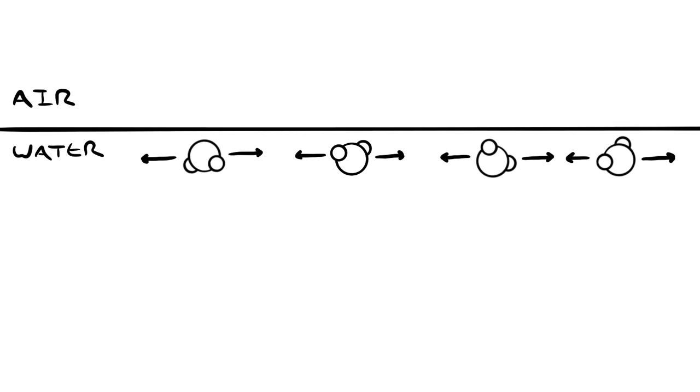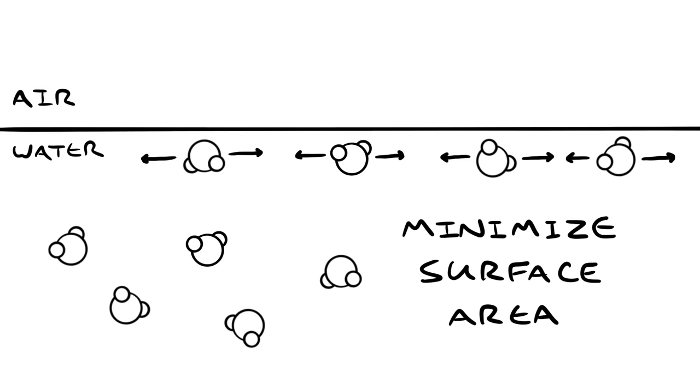Every molecule on the surface is pulling on its neighbors, but there are all of these other molecules inside that can't just disappear. So, water attempts to minimize surface area for a given volume.